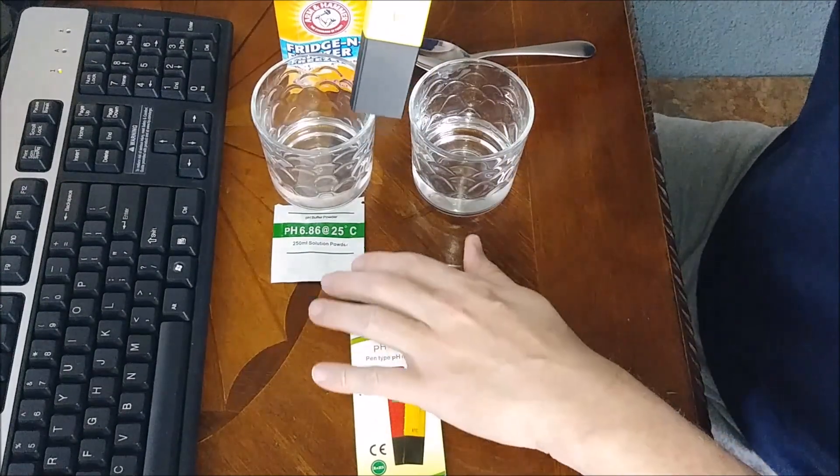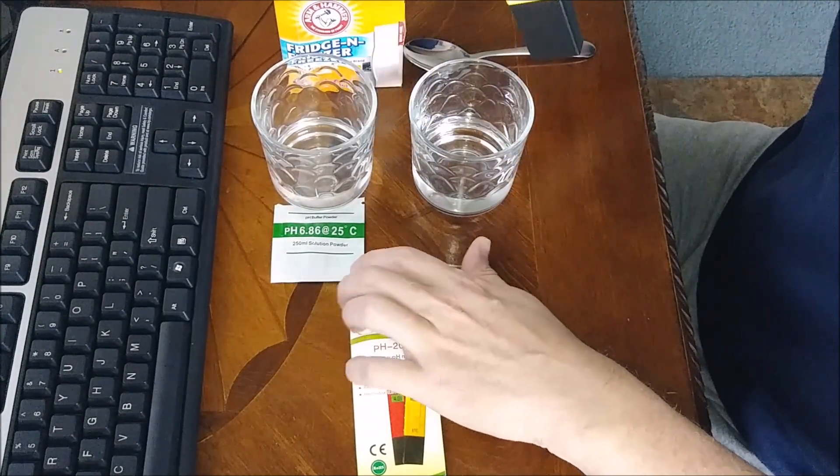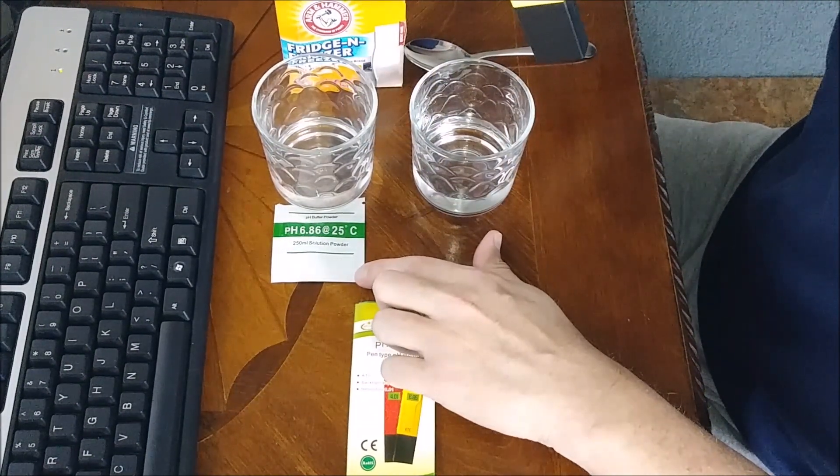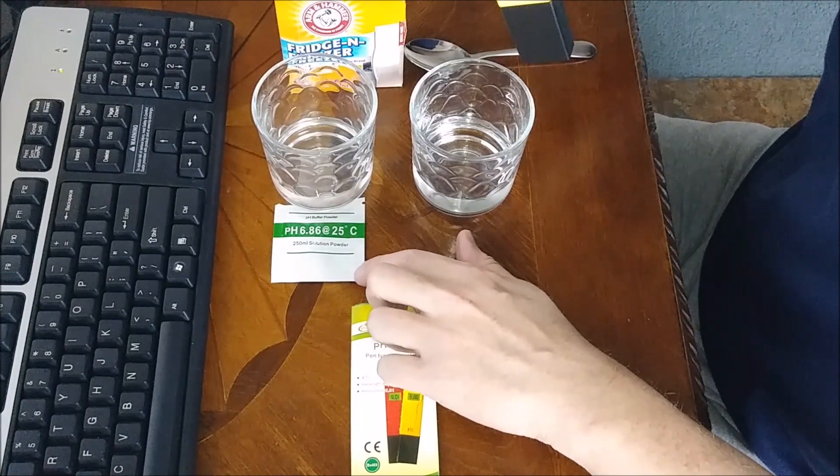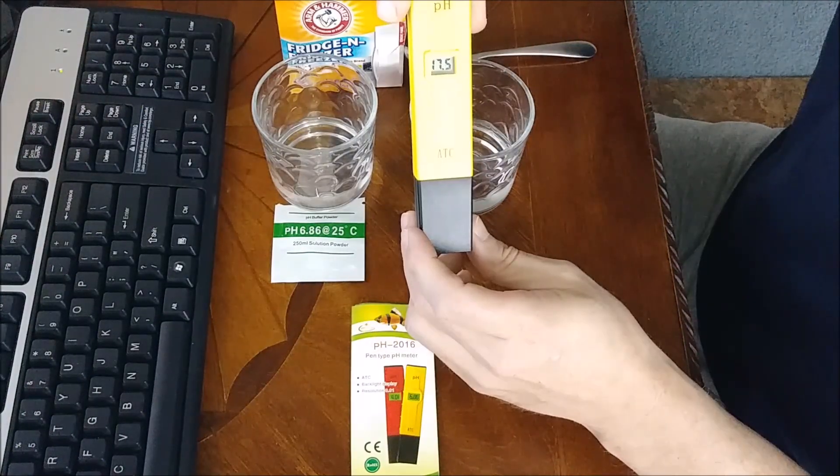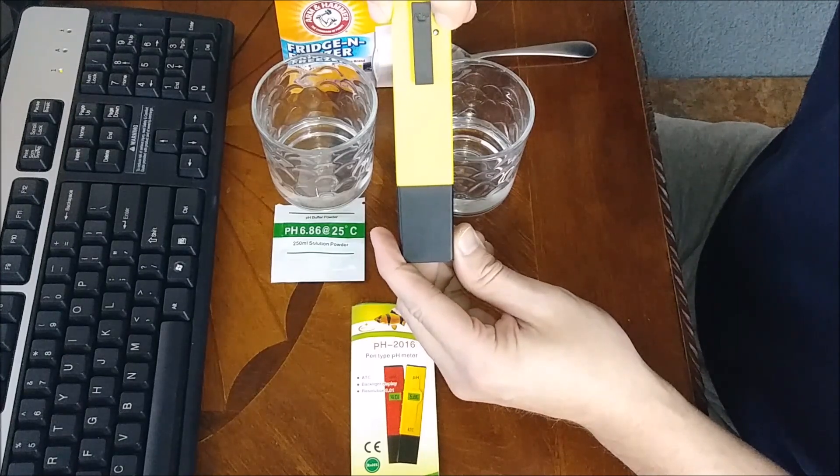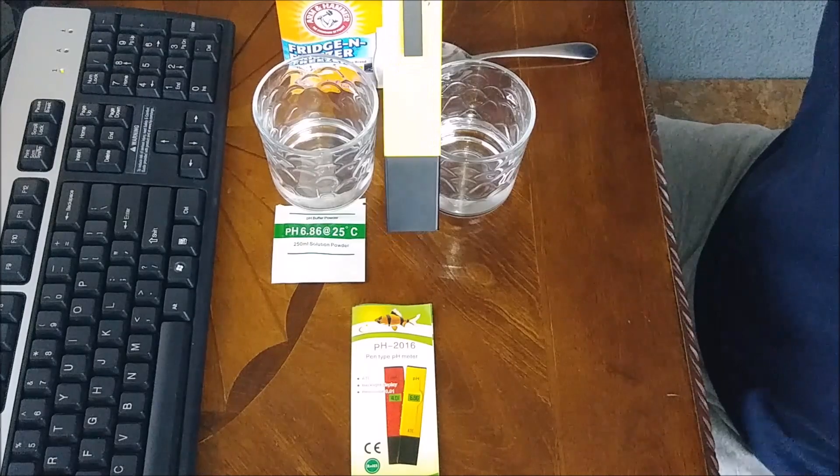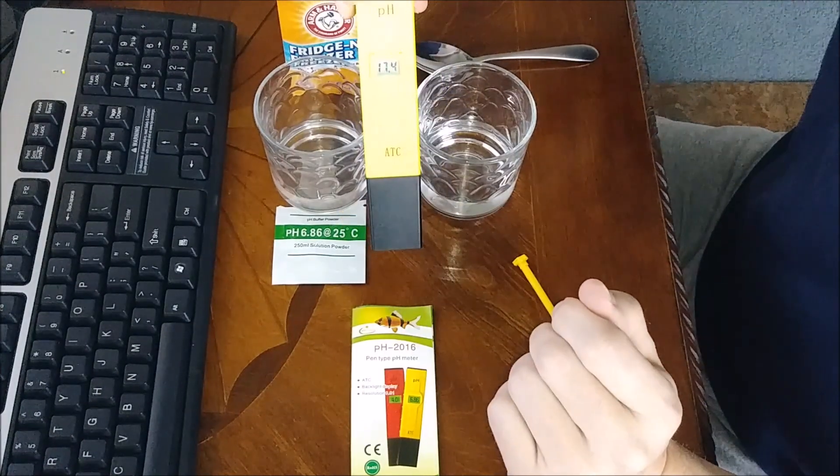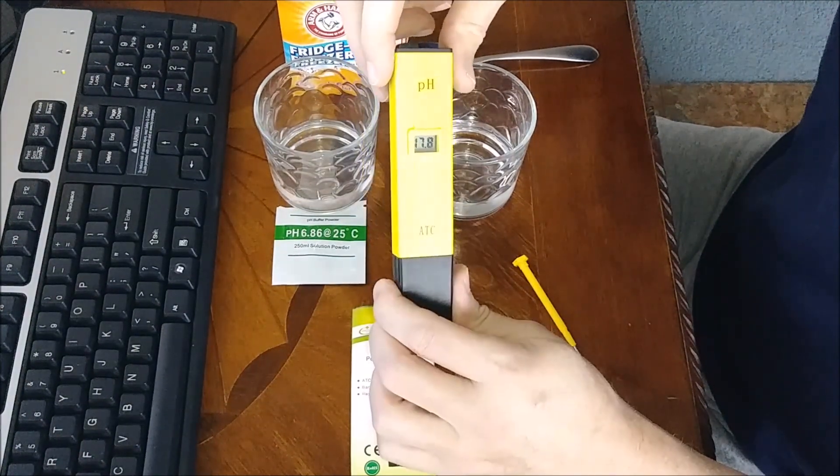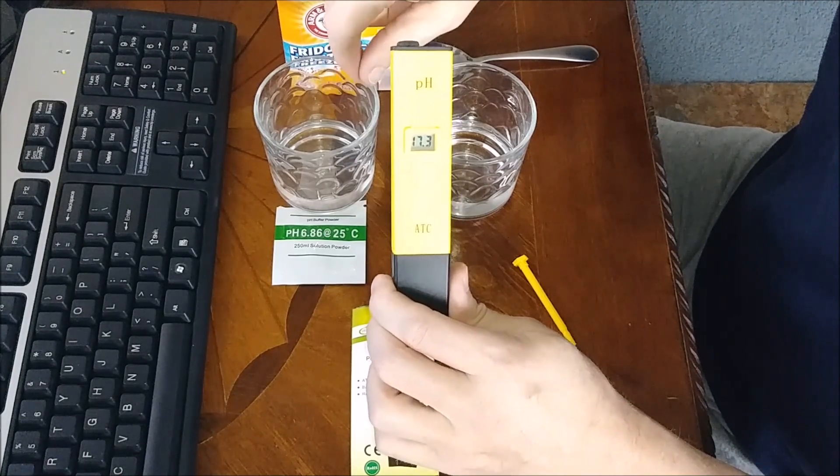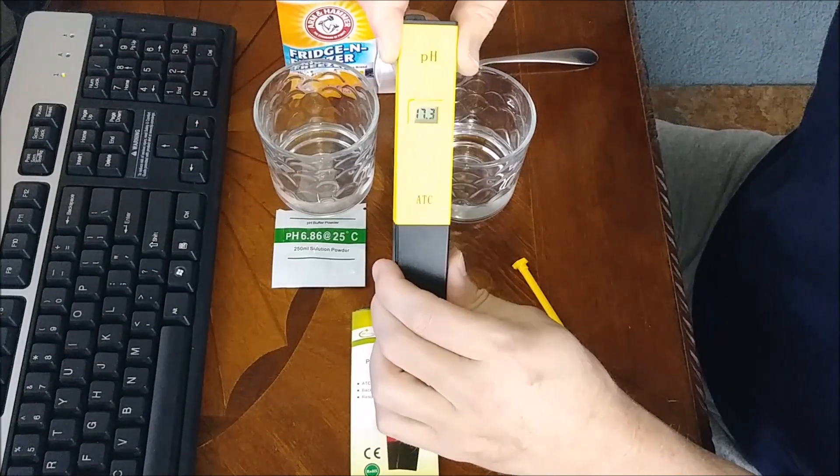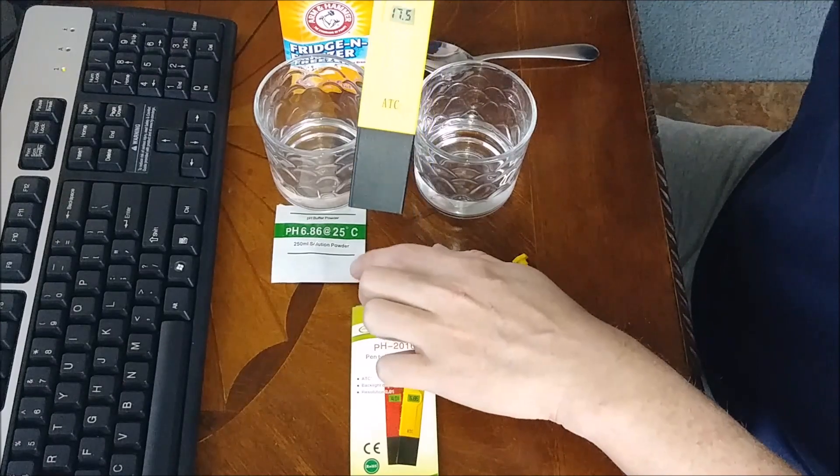Usually when you buy these, they will come with a solution in a little package that's already pH'd to 6.86, and that's how you set up your tester. It's got a little adjustment screw right there and also comes with a screwdriver with the kit. I think this was around $15 to $18. I'm going to go ahead and calibrate it per the manufacturer's instructions with their pre-pH package.